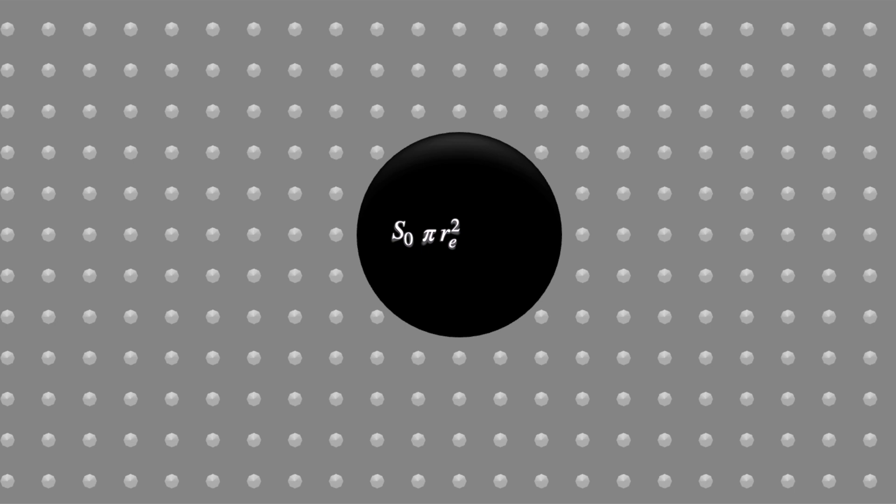It reflects a proportion of the incident light, which we represent by alpha. So it absorbs 1 minus alpha times the intercepted light.